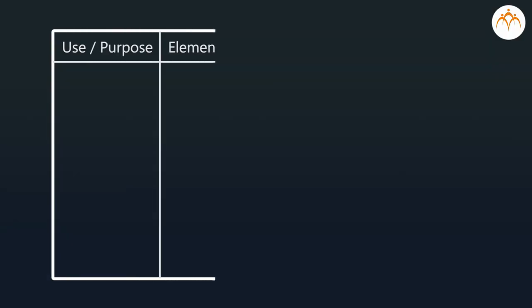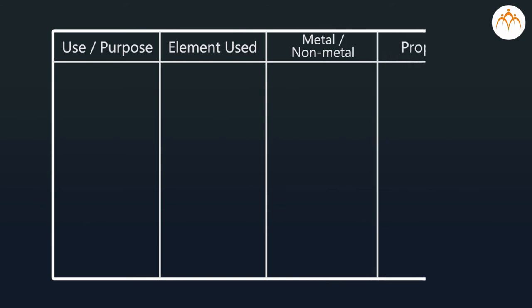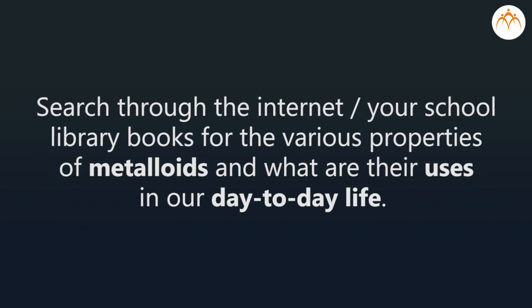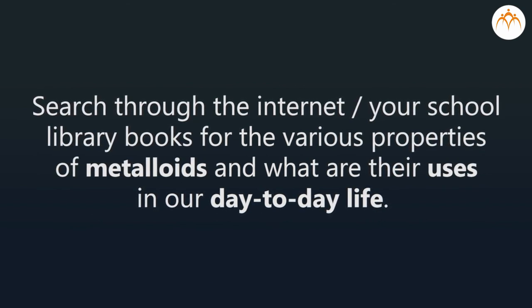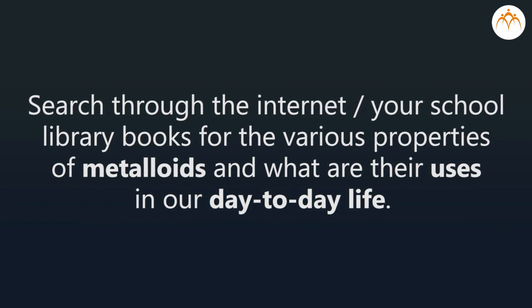From your surroundings, make a list of metals and non-metals used for various purposes based on their physical properties in the following format: Use or purpose, Element used, Metal or non-metal property. Search through the internet or your school library books for the various properties of metalloids and their uses in our day-to-day life.